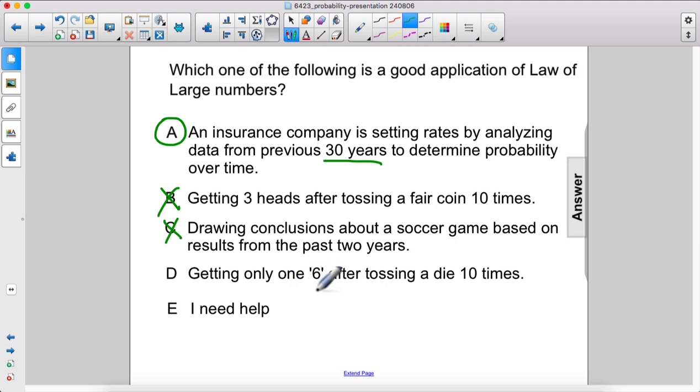Getting only one six after tossing a die ten times. No, that's ten trials, not enough trials. A is the best example.